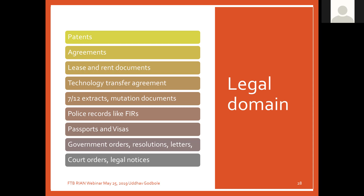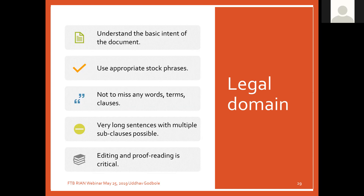Then we turn to the legal domain. In the legal domain you will get various documents like patents, agreements, lease and rent documents, technology transfer agreements. In India you get English-to-Marathi or Marathi-to-English translations of 7/12 extracts and mutation documents, which pertain to lands and properties. There are also police records like FIRs, passports and visas, government orders, resolutions called GRs, government letters, correspondence, court orders, and legal notices.